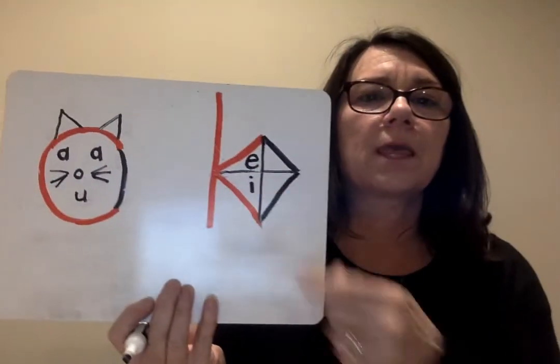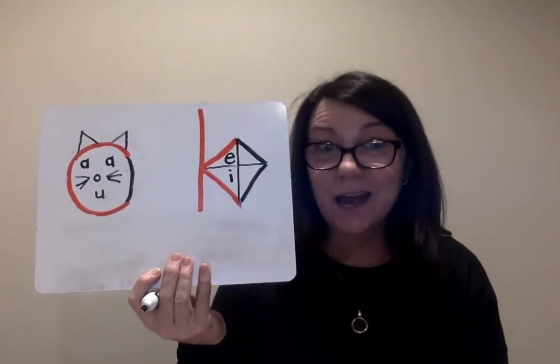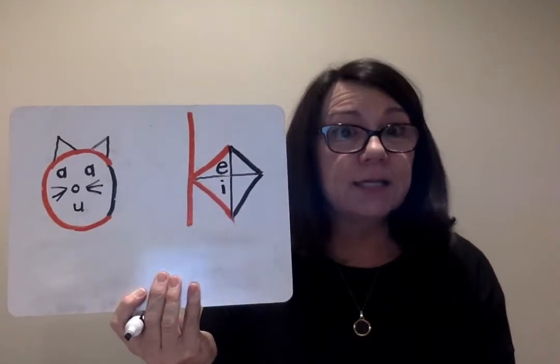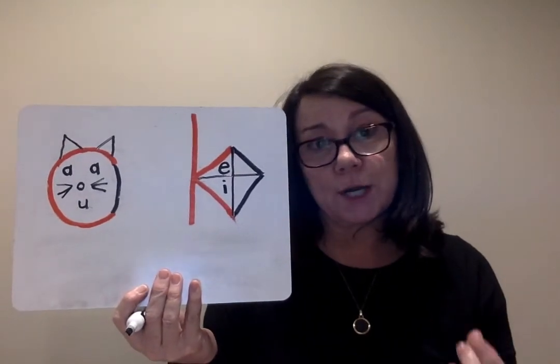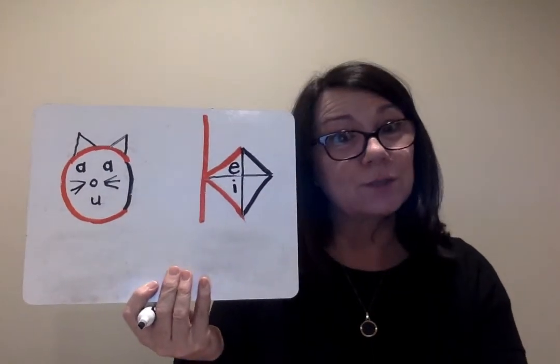Now I'm going to add some letters to my kite. You see the two letters that I wrote? E and I. Why do I put E and I in our kite? Because if the second sound you hear in a word is a short or long vowel E or I, it starts with K — the word starts with K.